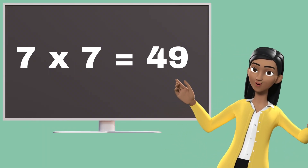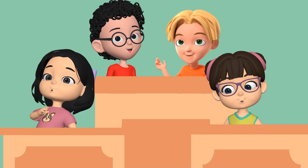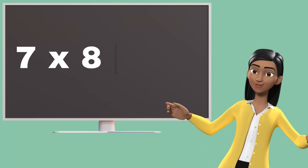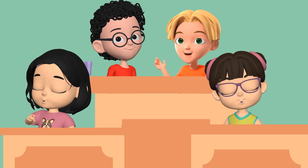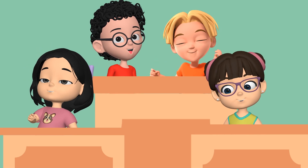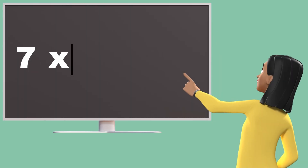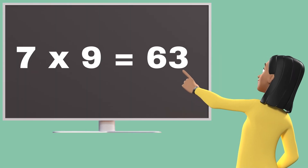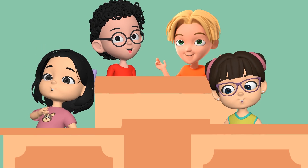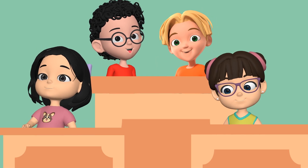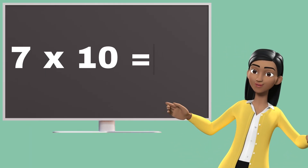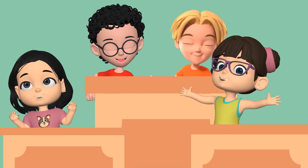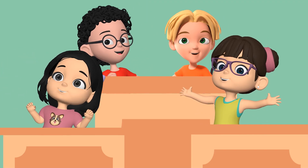Seven sevens are forty-nine. Seven sevens are forty-nine. Seven eights are fifty-six. Seven eights are fifty-six. Seven nines are sixty-three. Seven nines are sixty-three. Seven tens are seventy. Seven tens are seventy.